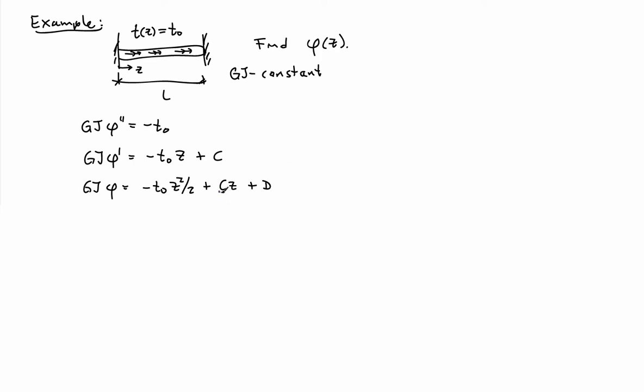C and D are constants of integration, and I'm going to eliminate those using the boundary conditions. The bar is built in at both sides, so the boundary conditions are zero rotation at Z equals 0 and zero rotation at Z equals L. So there's my two boundary conditions.